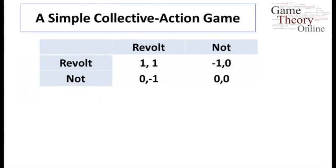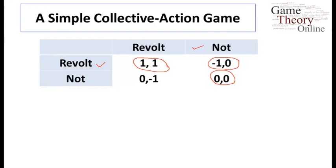Let's look at another example. We might call this a collective action game. We have two citizens, and they each can decide whether to participate in a revolution or not. If they both participate, their revolution is successful and they get some positive payoff. If they both decide to stay home, nothing of note happens. However, if one revolts and the other does not, the revolutionary fares very poorly, and the person who stayed home, nothing of note happens to them. That's our game.